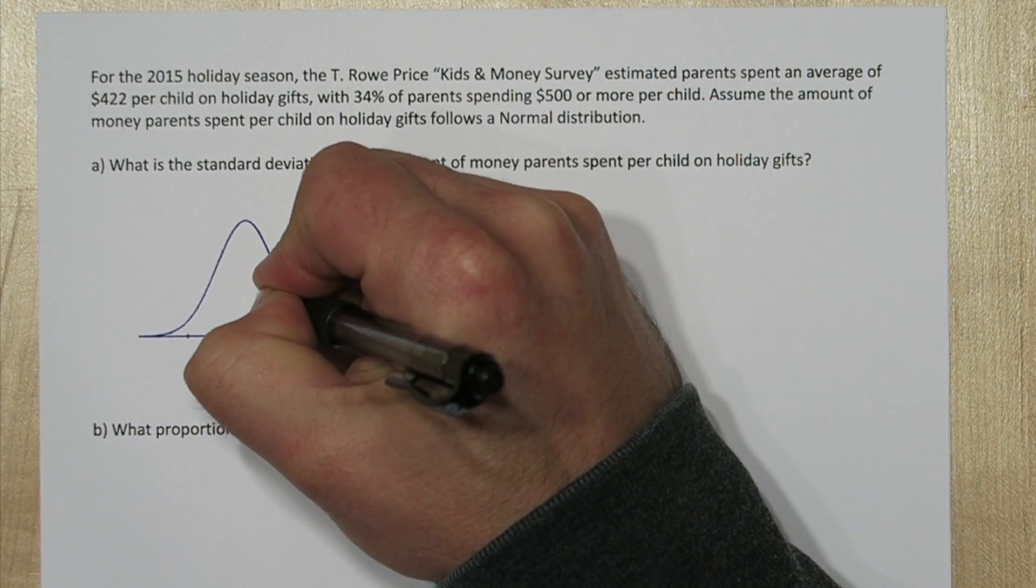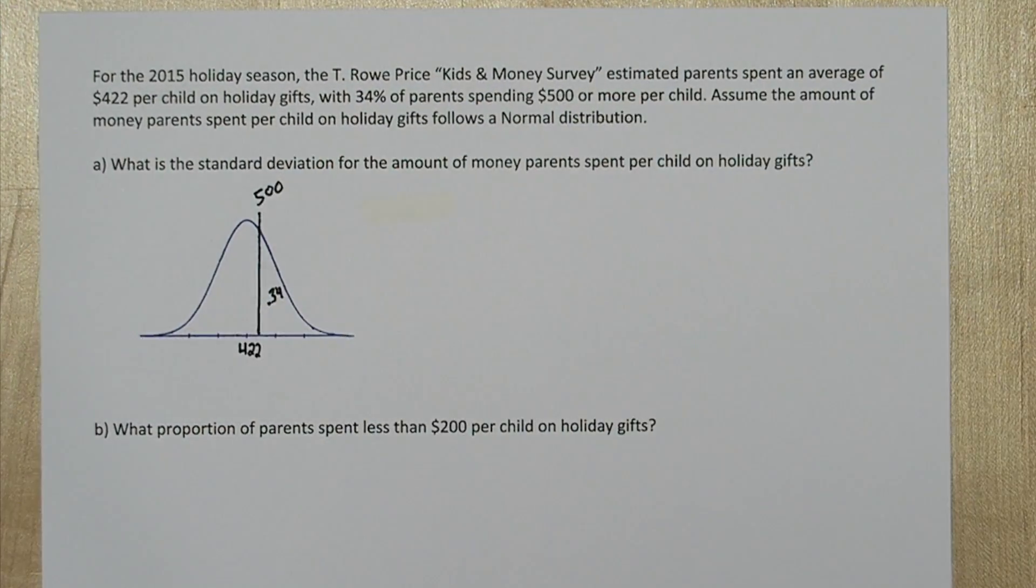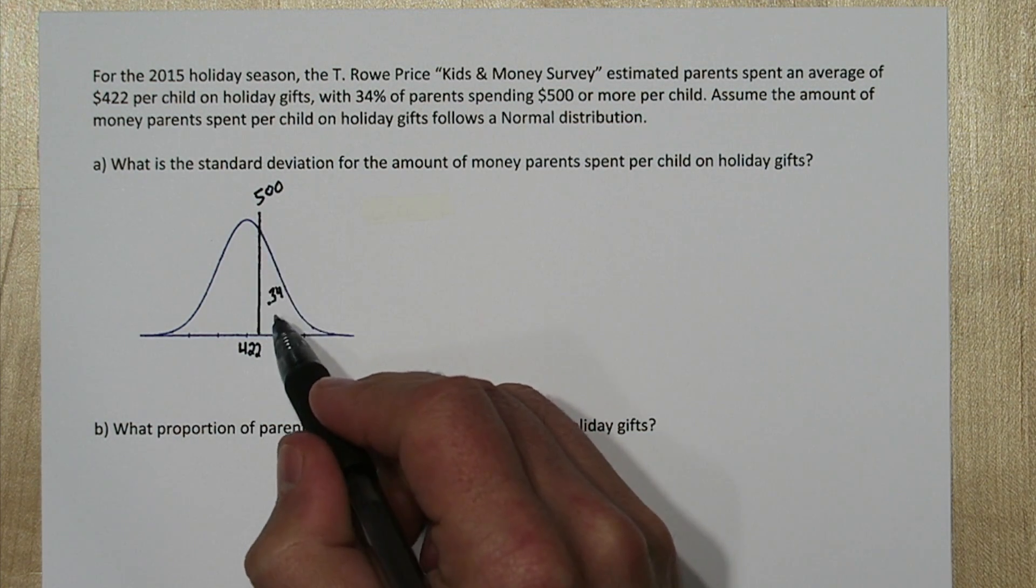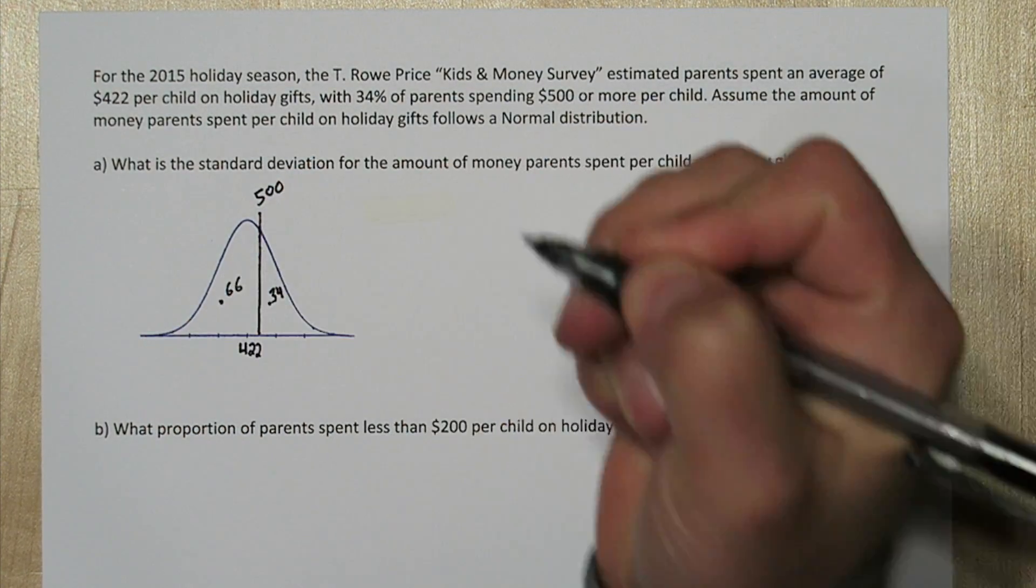We also know that $500 cuts off the upper 34% of the distribution. So we need to figure out what the standard deviation is. Now if the area to the right of this 500 is 0.34, that means the area to the left is 0.66.